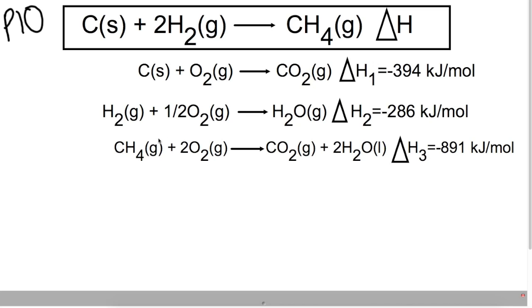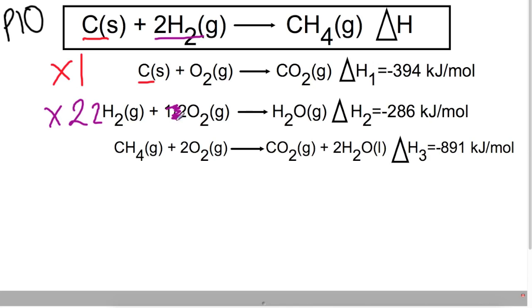The method here is to inspect these equations and match them up to see what we need. For carbon, we've only got one carbon, so we leave this equation as it is — just one times this equation. For hydrogen, we have two hydrogens whereas here we've only got one, so we need to multiply this entire equation by two. For methane, it is on the right-hand side of the arrow here, whereas here it's on the left, so we need to multiply this one by minus one to flip it over.